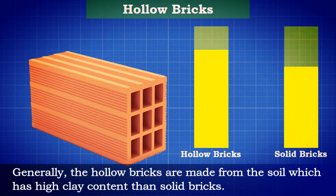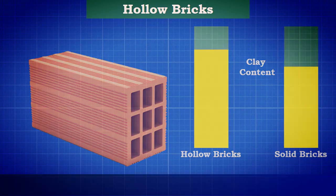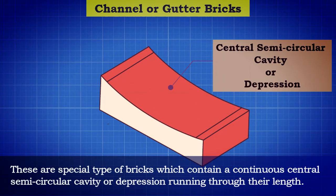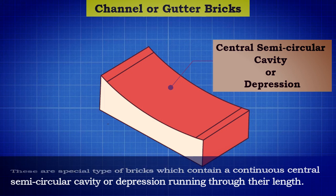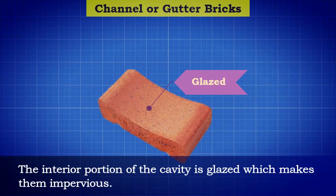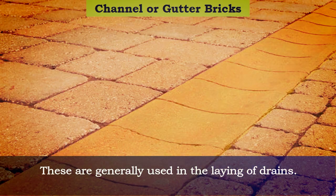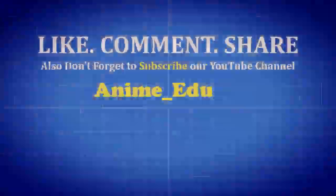Generally, hollow bricks are made from soil which has a higher clay content than that used for solid bricks. Channel or Gutter Bricks: these are a special type of brick which contain a continuous central semi-circular cavity or depression running through their length. The interior portion of the cavity is glazed, which makes them impervious. These are generally used in the laying of drains.